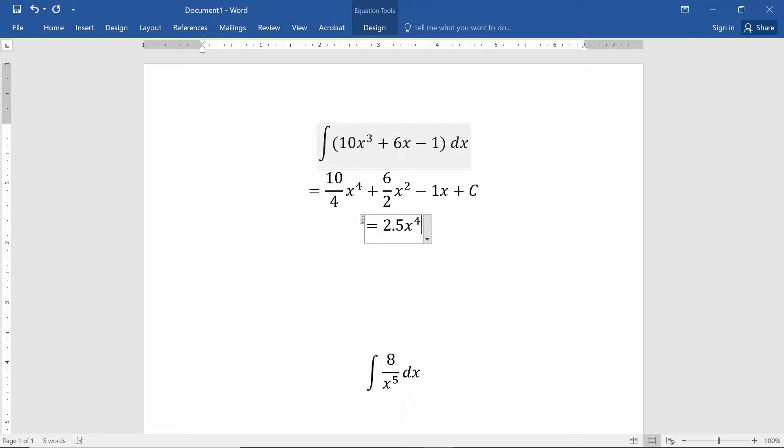The point is that 2.5x⁴ + 3x² - x + C is the antiderivative or the indefinite integral for 10x³ + 6x - 1. That is what we end up with.